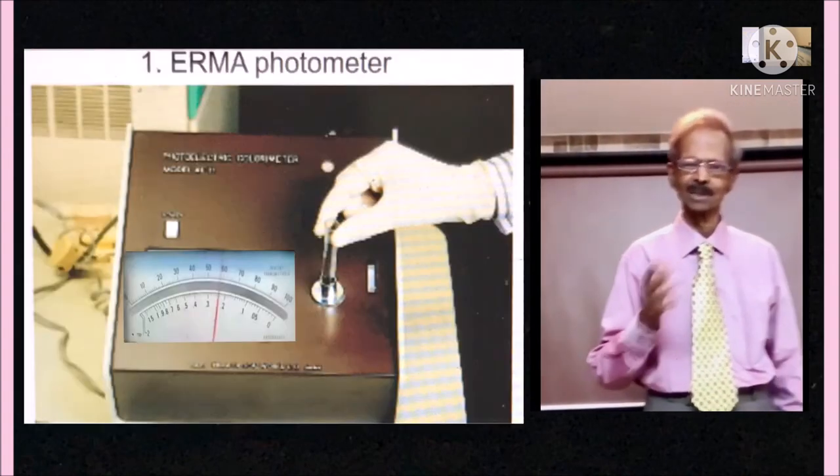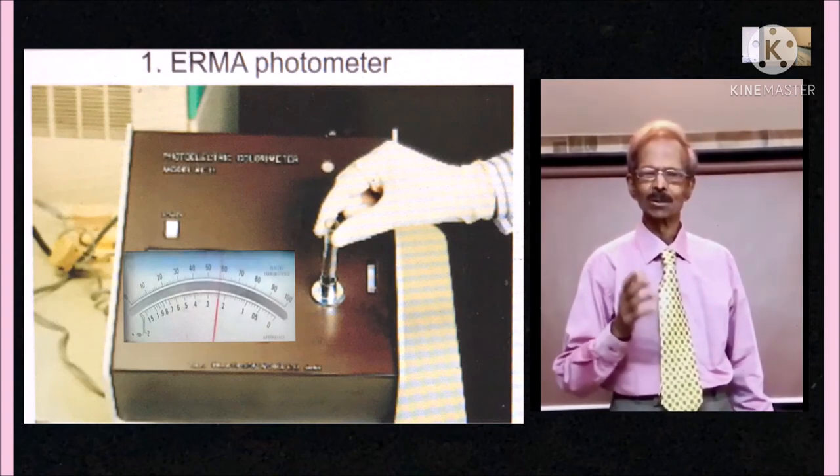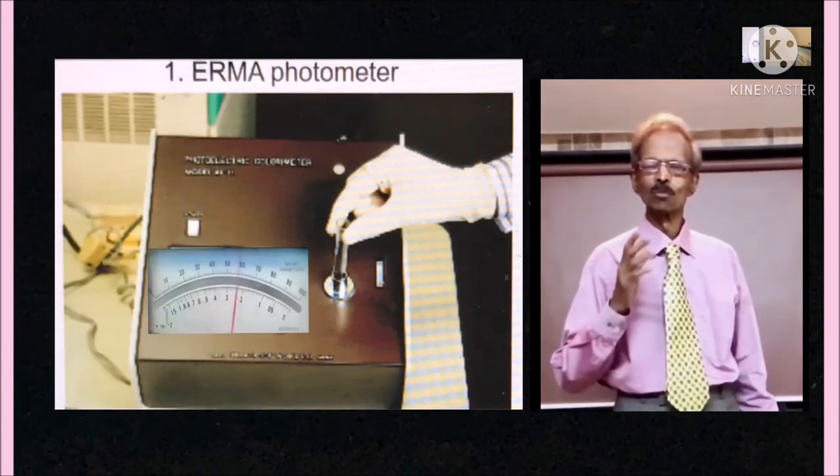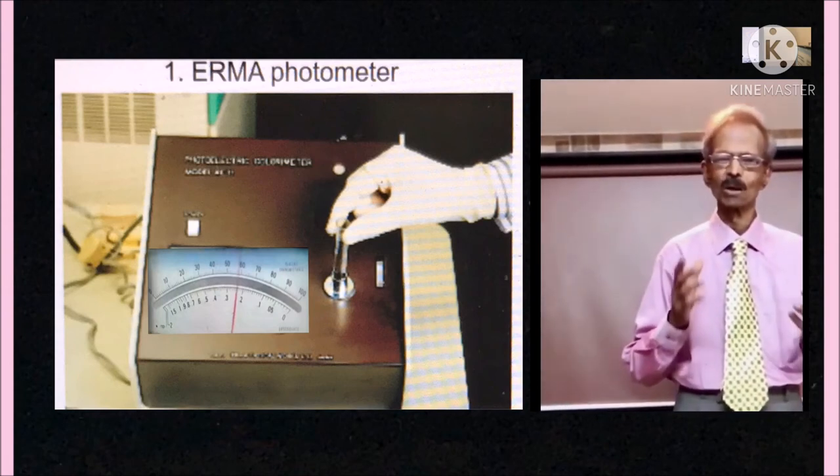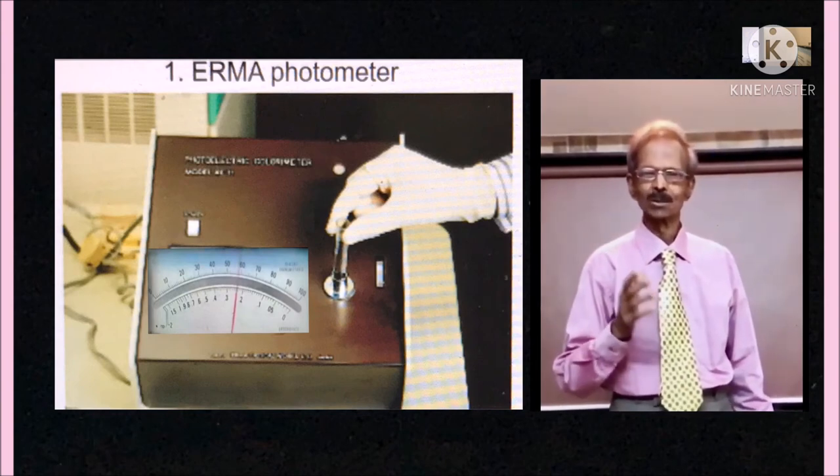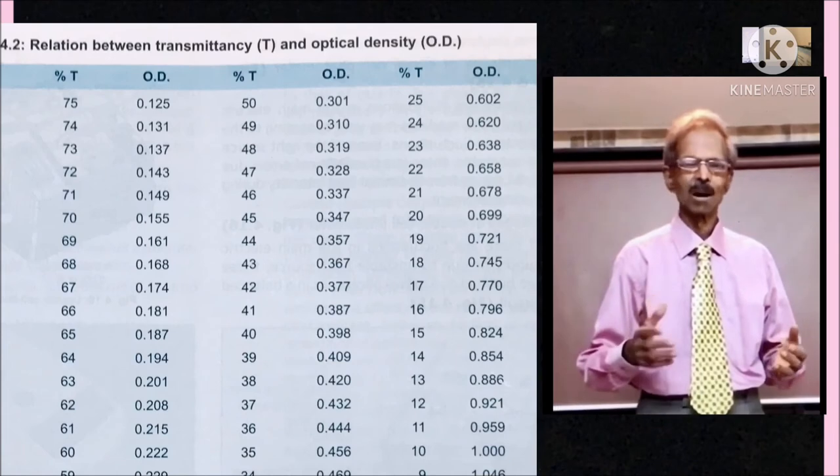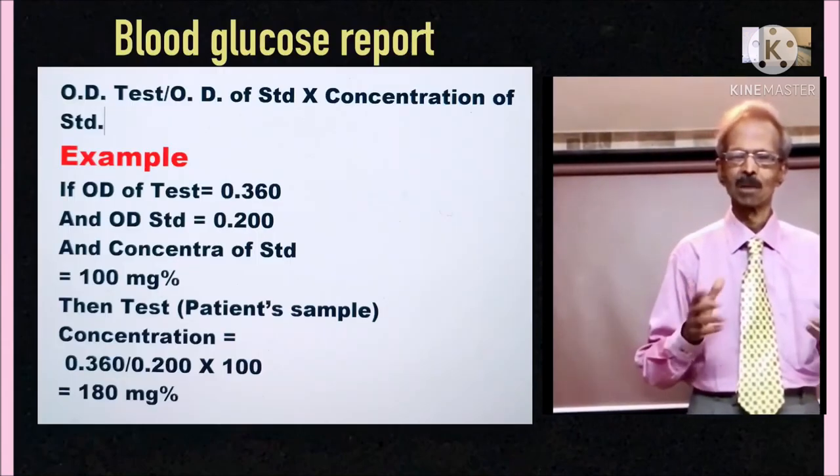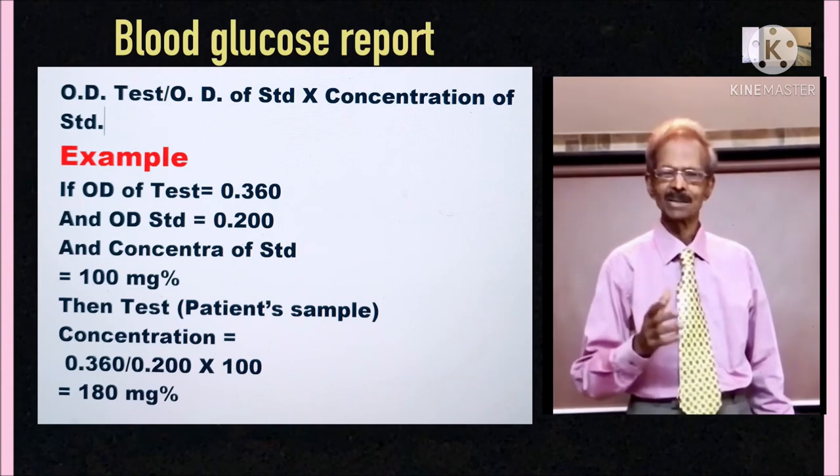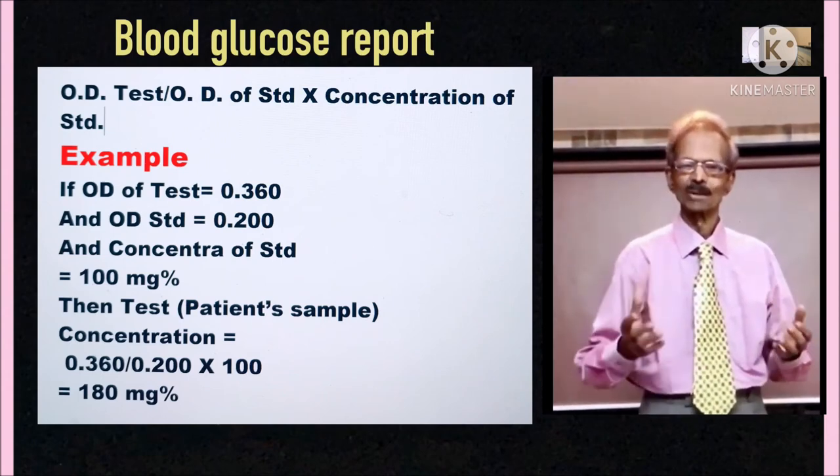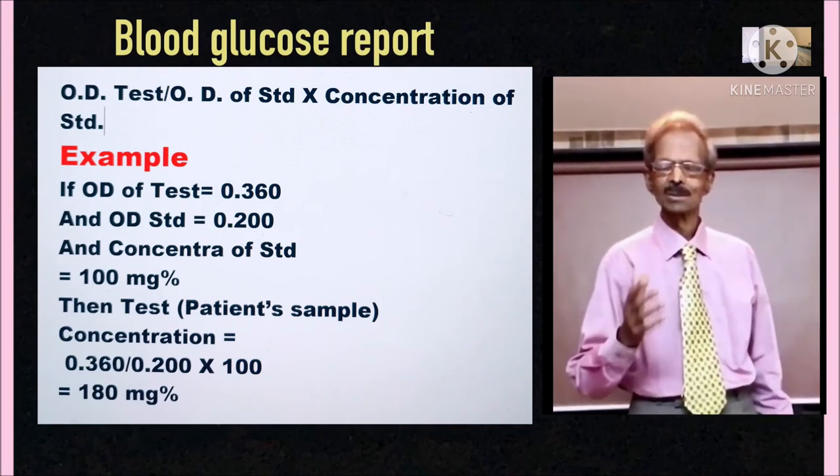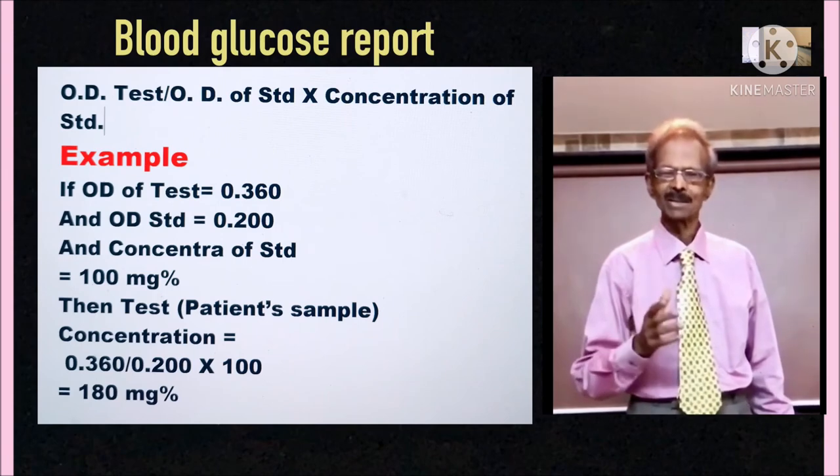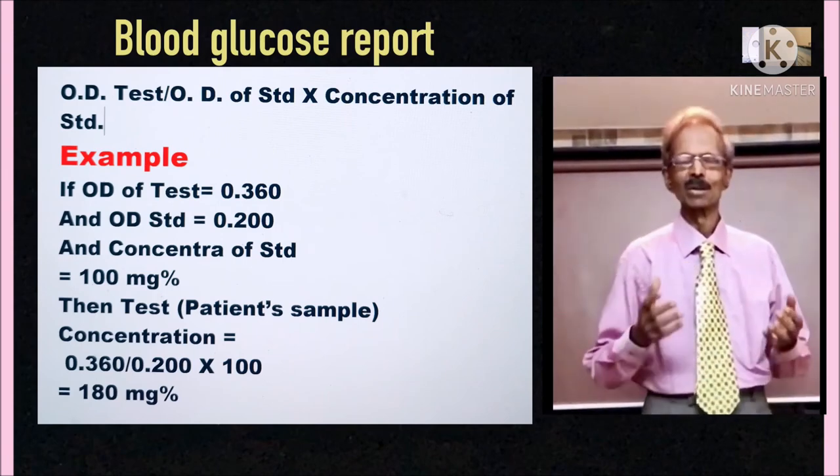7. Fill another cuvette with test solution and note the reading. If you are reading percent transmittance, you can use this chart to convert to optical density. Then if test reading is 0.360 OD and standard reading is 0.200 OD, by using Beer's formula calculate the value of patient's plasma glucose as follows: 0.360 divided by 0.200 multiplied by 100, that equals 180 milligrams percent.